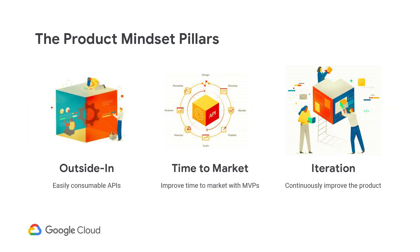To recap, the API product mindset consists of three key focus areas. First, focus on the user experience — think outside-in and get a good understanding of the user's needs in order to create a positive experience. Second, make it easy to consume with documentation and sample code; time to market is key, and the first to market will have a leg up on competitors. Third, iterate — don't try to boil the ocean, but design for extensibility. Design for the basic value proposition, get feedback, and continue to iterate to improve the product.